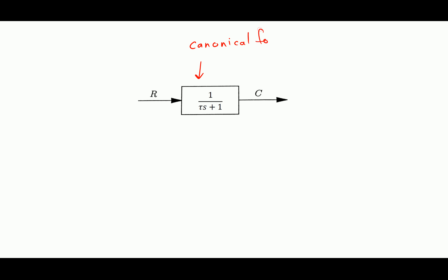I called this guy the canonical form — the canonical form of a first-order system. And I said the more general form would be A over tau*S plus 1, where I call this term the DC gain. In other words, it's the value of the transfer function at S equals 0.